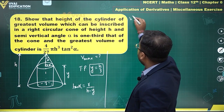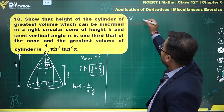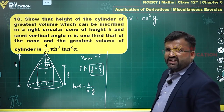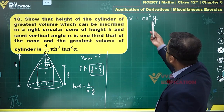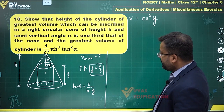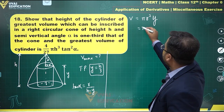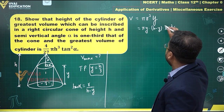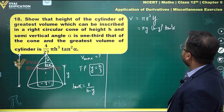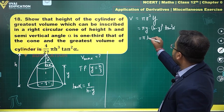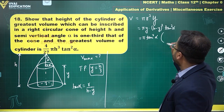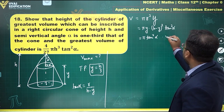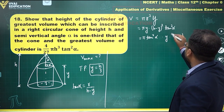The volume of the cylinder is V = πr²·y. Substituting r = (h - y)·tan α, we get V = π·y·(h - y)·tan α whole squared. This simplifies to V = π·tan²α · y·(h - y)².